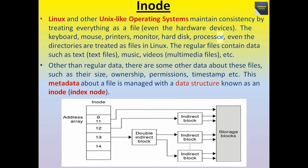Regular files contain data such as text, music, video, etc. Other than regular data, there are some other data about these files such as their size, ownership, permissions, timestamp, etc. This metadata about a file is managed with a data structure known as an inode or index node.